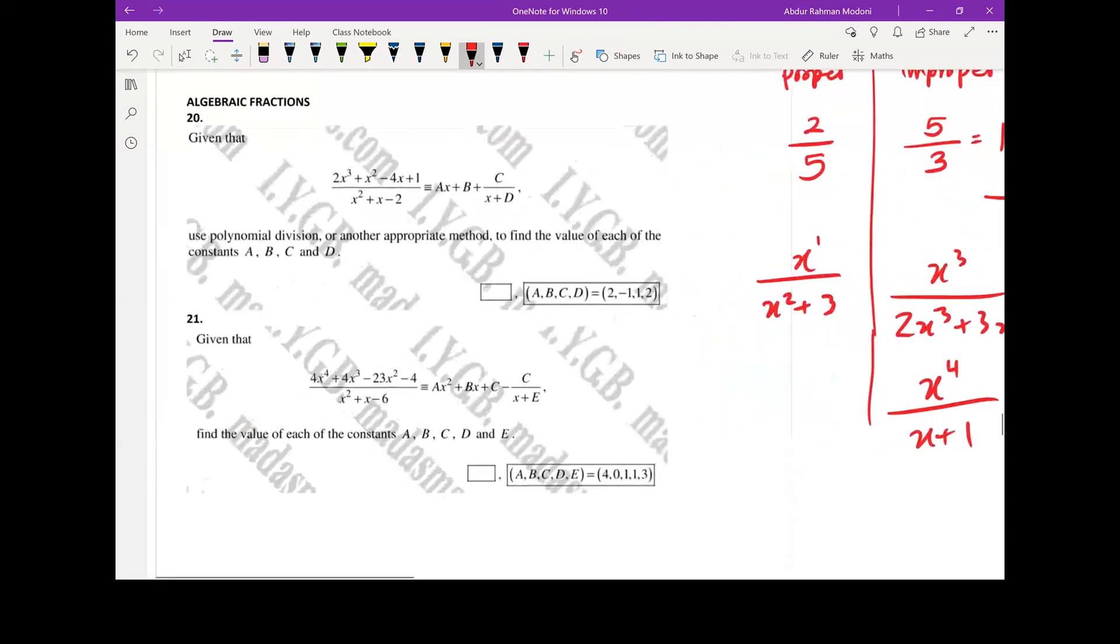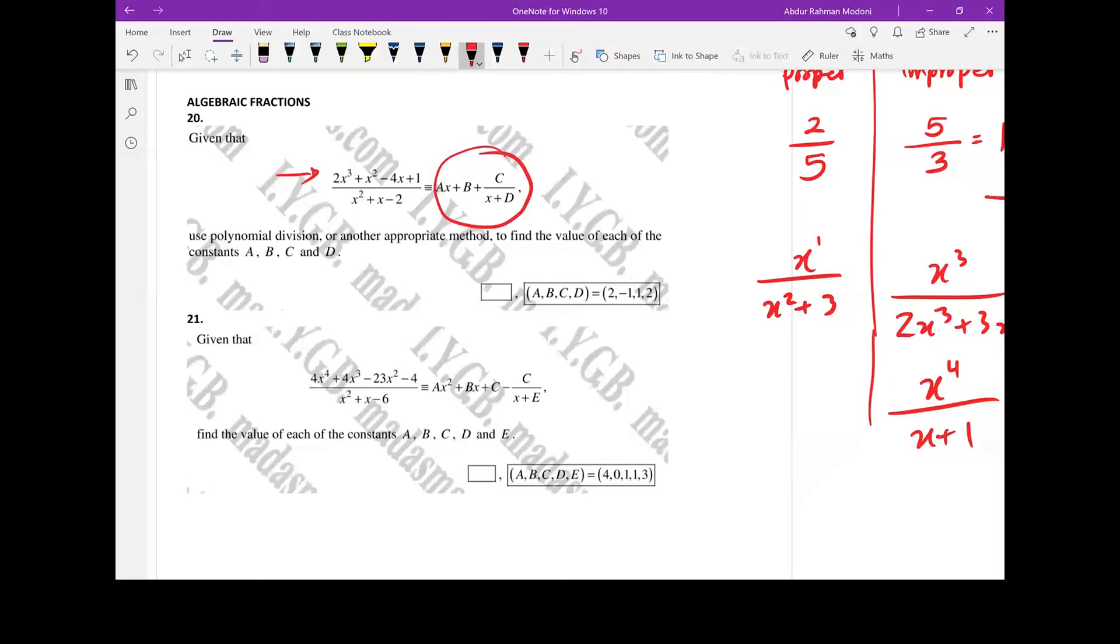So first thing here, we've got a few questions. As you can see here, the numerator has a higher order than the denominator, so therefore it is an improper algebraic fraction. And we can write in this form. So straight away when you see something in this form, it means it goes into it this many times: how many times x squared plus x minus 2 goes into that numerator is ax plus b, plus c will be the remainder.